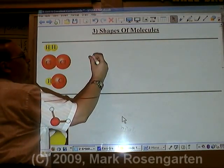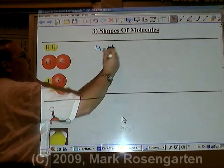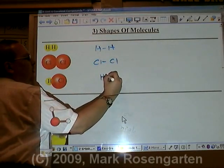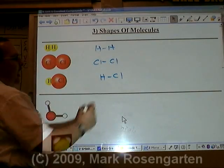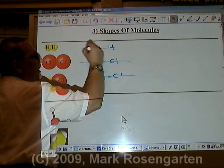Examples of linear molecules include H2, Cl2, and HCl. Notice that their atoms are arranged in a straight line.